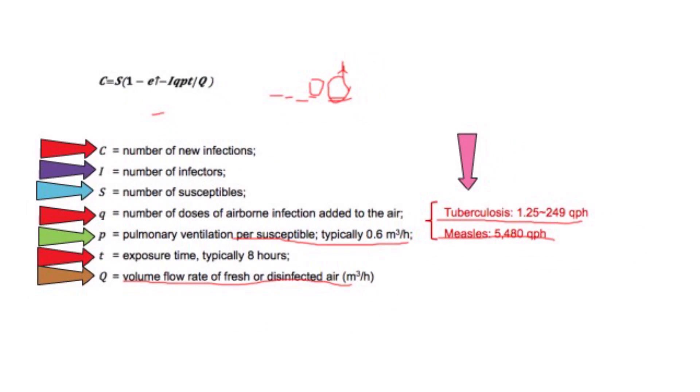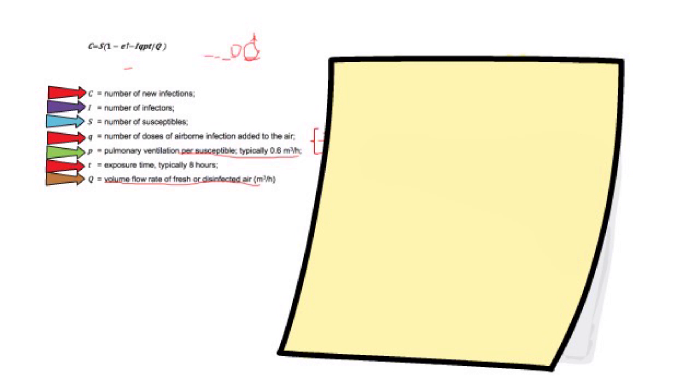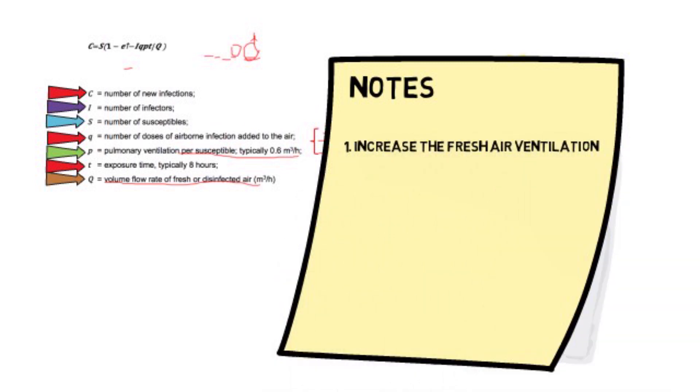Lastly is the variable we can control, volume flow rate of fresh or disinfected air. For an HVAC engineer or building operator, we can increase the fresh air ventilation rate to reduce the risk of cross-transmission or person-to-person transmission through aerosols.